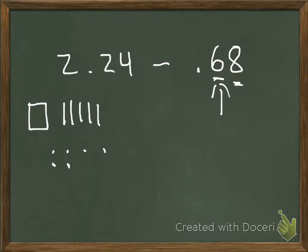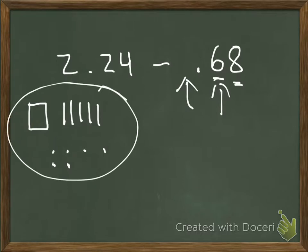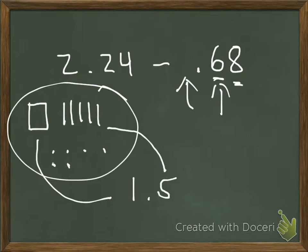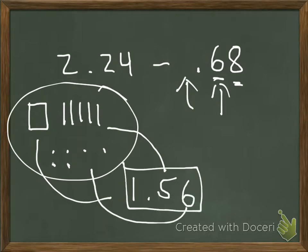There are no whole numbers to subtract from my remaining 1 whole. So what I'm left with is 1 whole, 5 tenths, and 6 hundredths. Therefore, my answer is 1 and 56 hundredths.